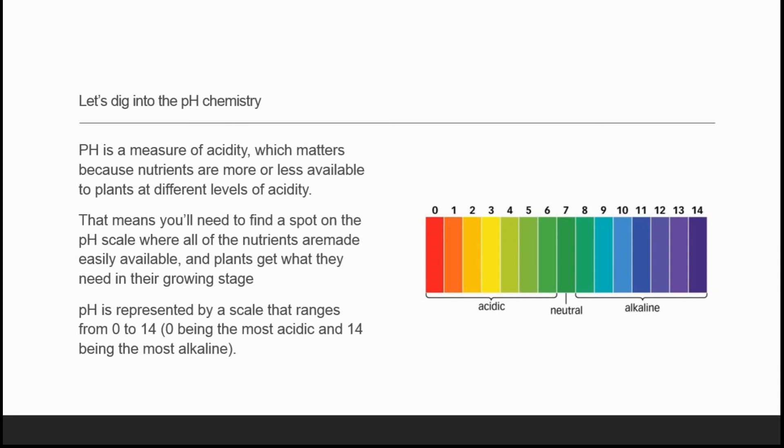Plants get what they need in their growing stage. pH is represented by a scale that ranges from 0 to 14: 0 being the most acidic, 7 being neutral, and 14 being the most alkaline.